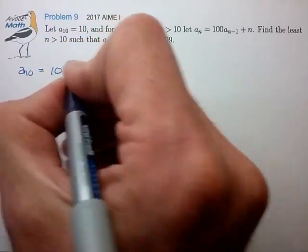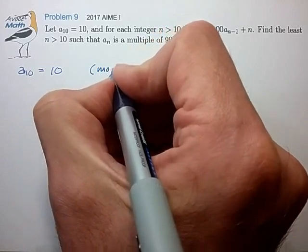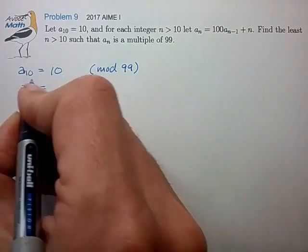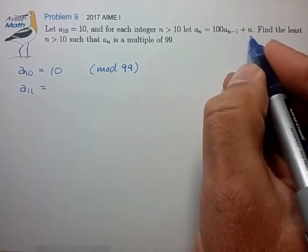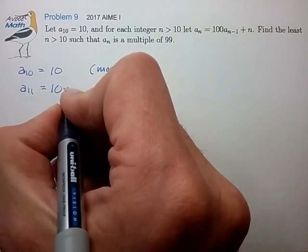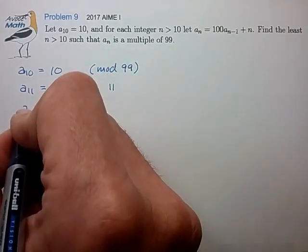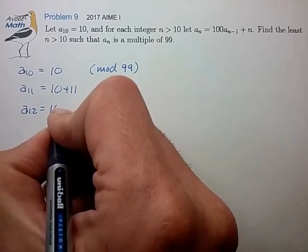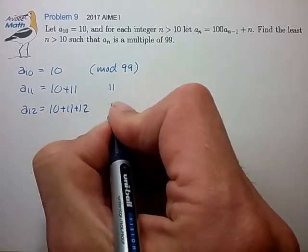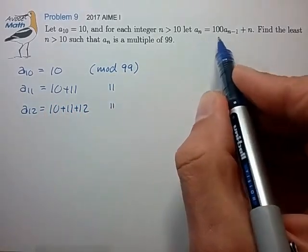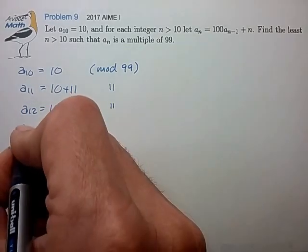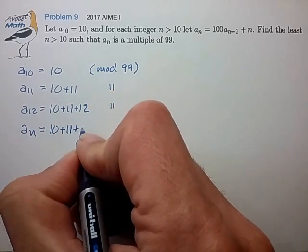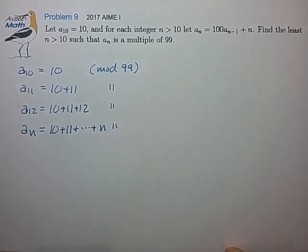a sub 10 is equal to 10 in mod 99. a sub 11 is just a sub 10 plus 11 in mod 99. a sub 12 is just a sub 11 plus 12 in mod 99. So in mod 99, this recursion relationship is really quite simple. We see that a sub n is just equal to 10 plus 11 all the way up to n, again in mod 99.